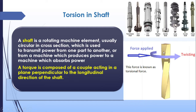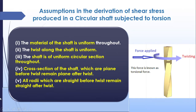A shaft works on the principle of torsion. Torsion is a twisting moment — it is otherwise known as a rotating twisting force. When we provide a twisting force, the shaft will rotate. When we apply a rotational force to a stationary object, it will always form a couple.